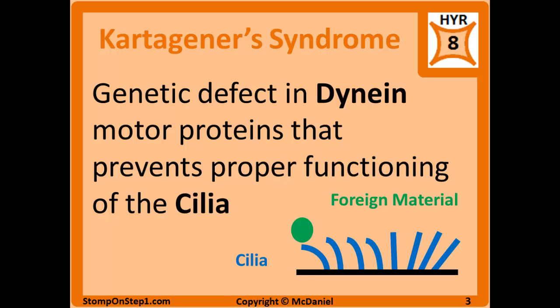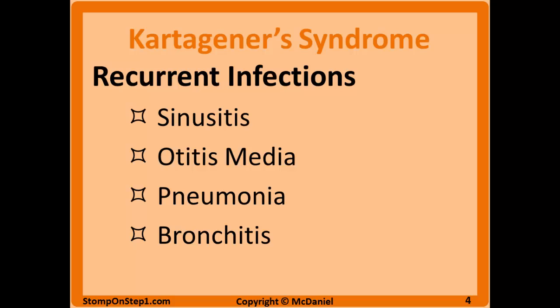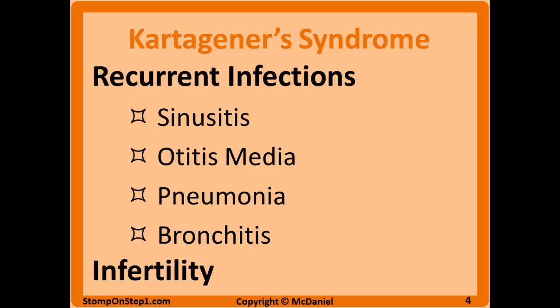Cilia play an important role mostly on mucosal surfaces to help clear foreign material and mucus. Kartagener's syndrome is a genetic defect in the dynein motor protein that prevents proper functioning of the cilia, and is a specific type of primary ciliary dyskinesia. Problems affect most mucosal surfaces including sinuses, ears, and respiratory tract, leading to recurrent infections such as sinusitis, otitis media, pneumonia, and bronchitis. You'll also see infertility in men due to non-functioning flagella on sperm, and in women due to mucus buildup that decreases the chance for fertilization and implantation.